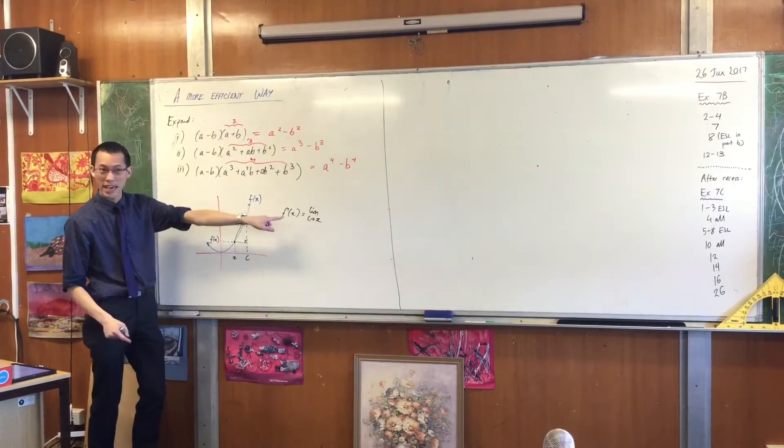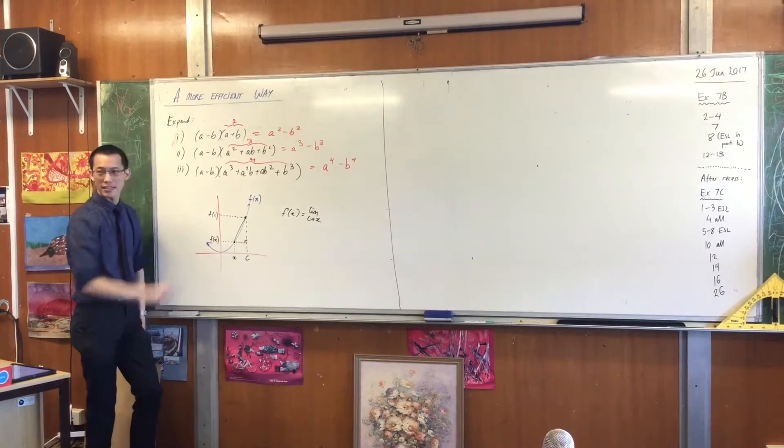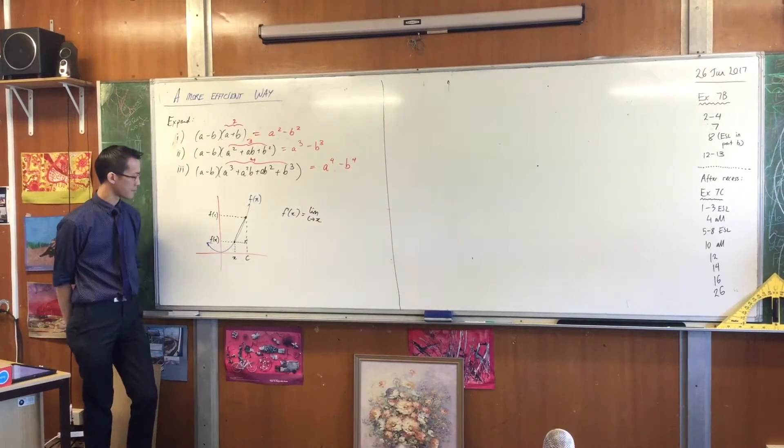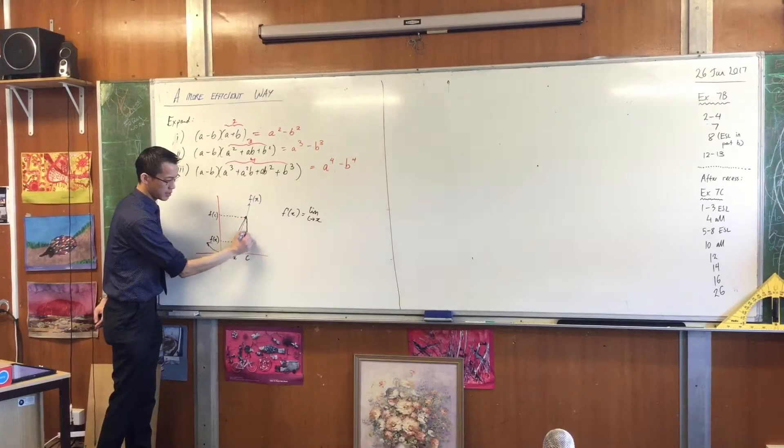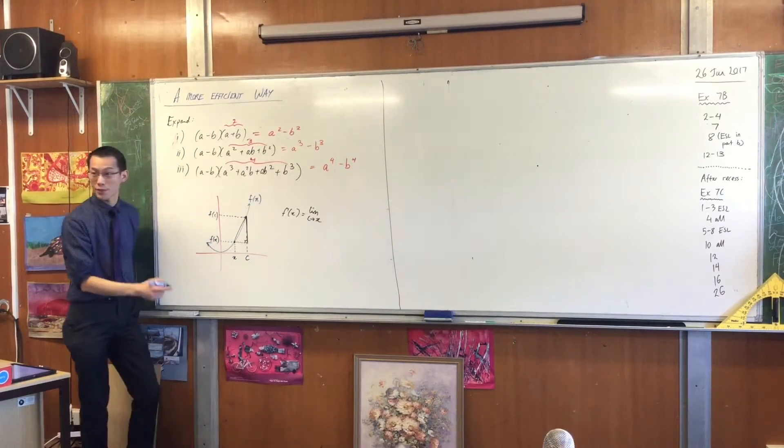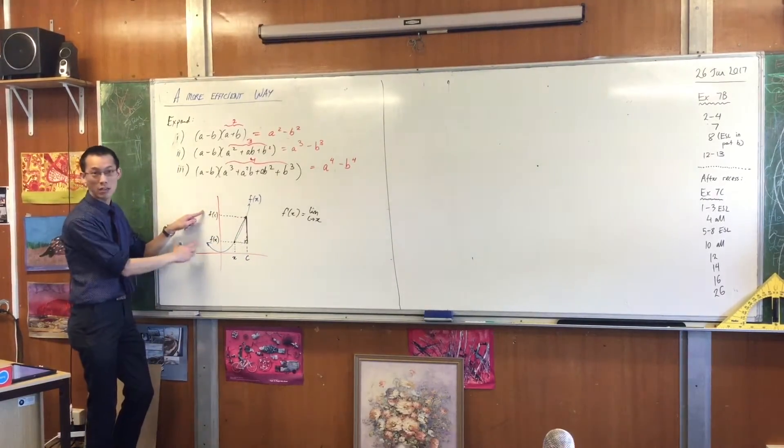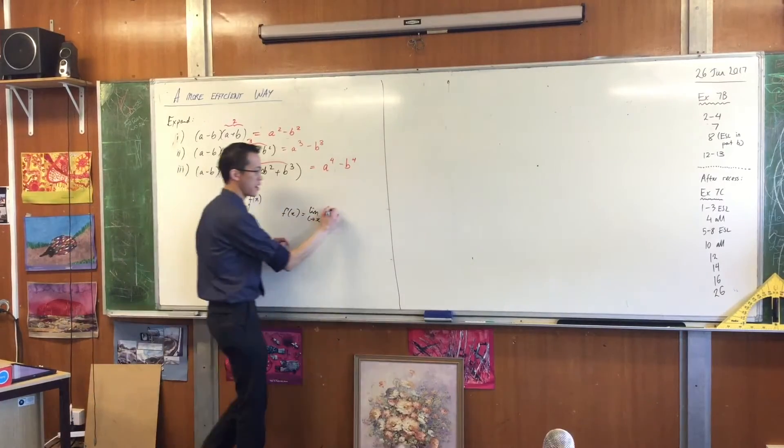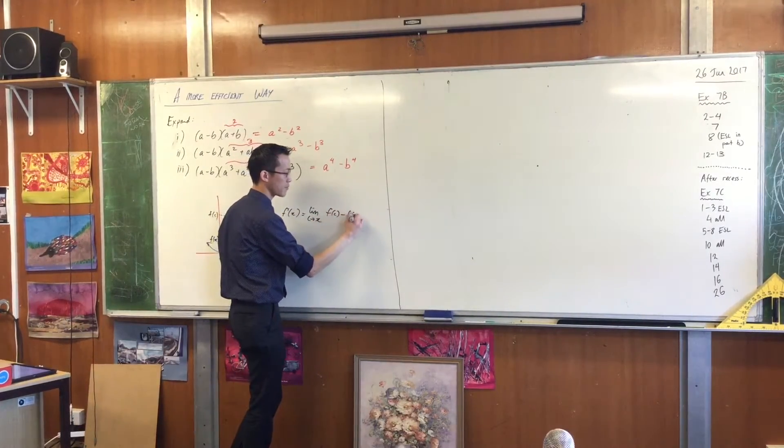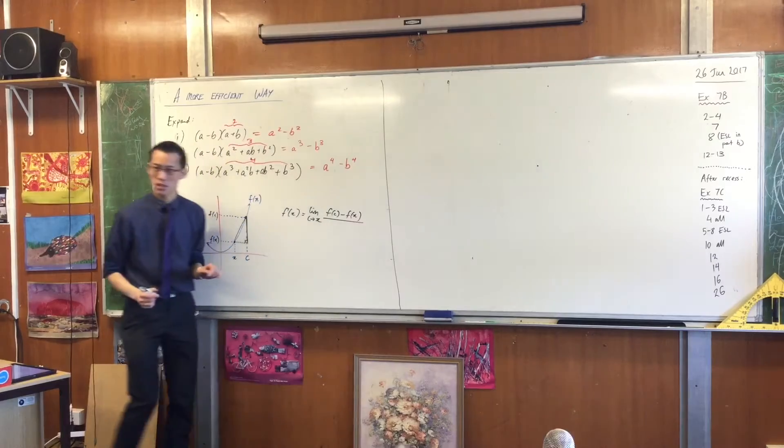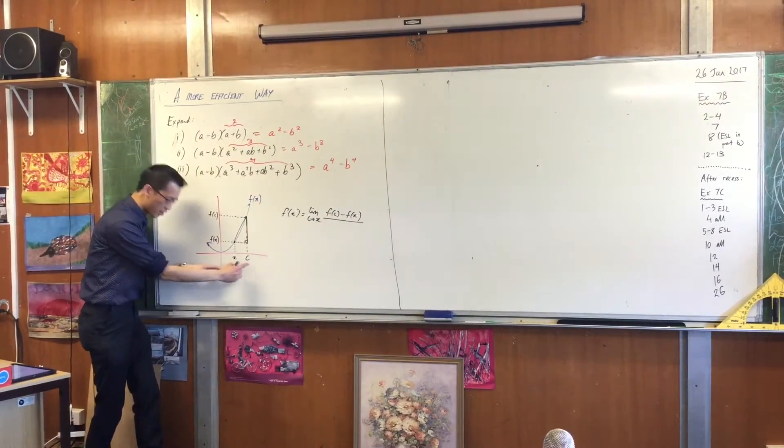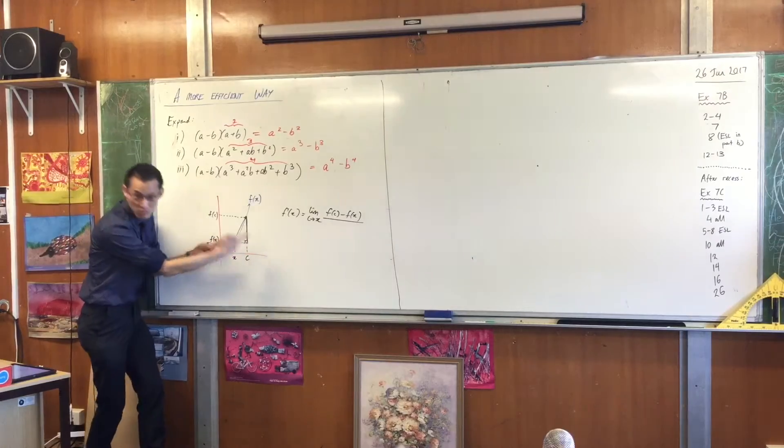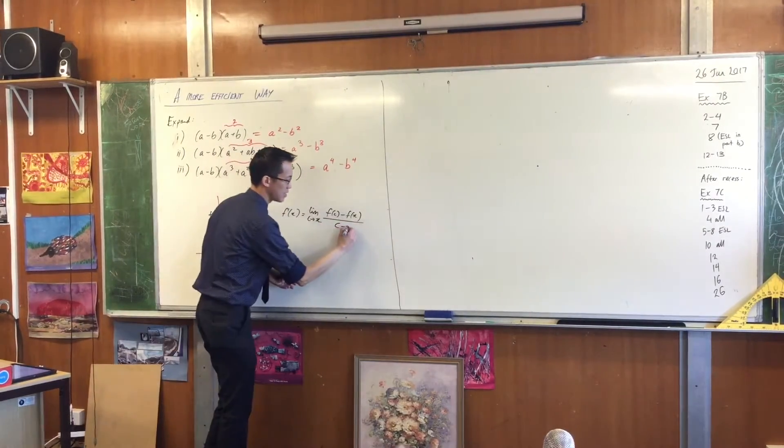The limit as C approaches X. What's the rise this time? Have a look at the rise. It's this distance, isn't it? Which is the difference between F of C and F of X. So that's my numerator. What's my denominator? Yeah, it's just X2 minus X1, which is just C take away X. That is the run.